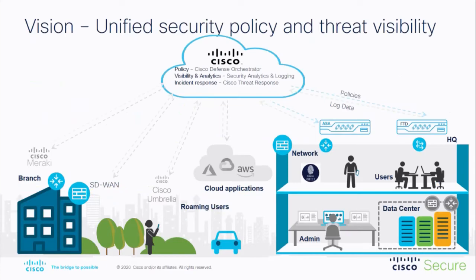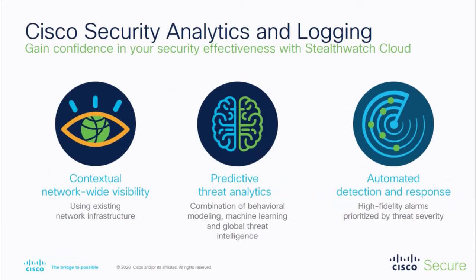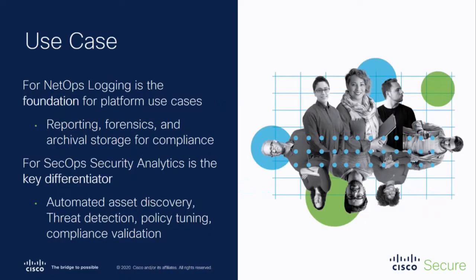We've got plenty of exciting things in the roadmap. We're trying to do a lot with all of the other devices within our infrastructure so you get that visibility all in one place — with your perimeter as well as inside your network. We might do that with Cisco Meraki integrations, or with SD-WAN in the future. You get contextual network-wide visibility, predictive analysis using Stealthwatch Cloud, and you're able to automate a lot of that — taking that burden away from you. These are the use cases that are going to make your NetOps and SecOps teams really happy.